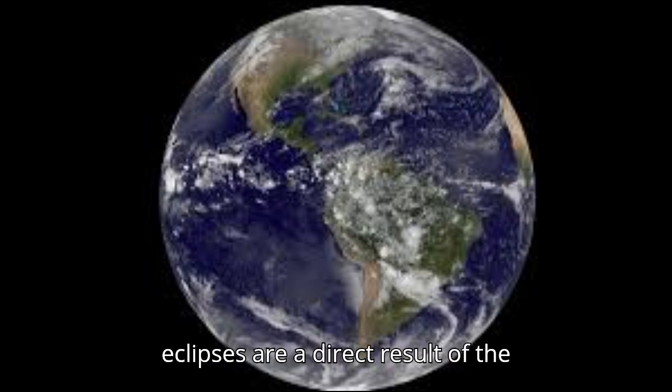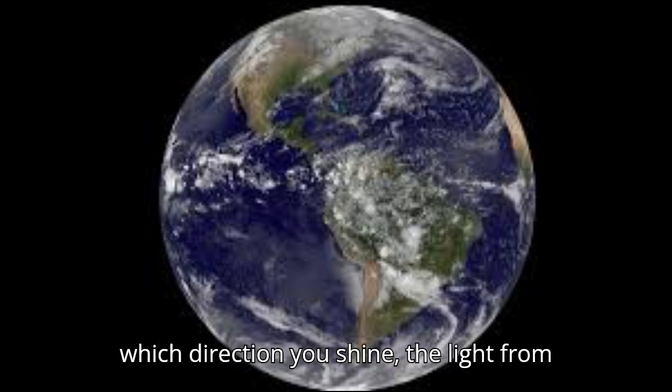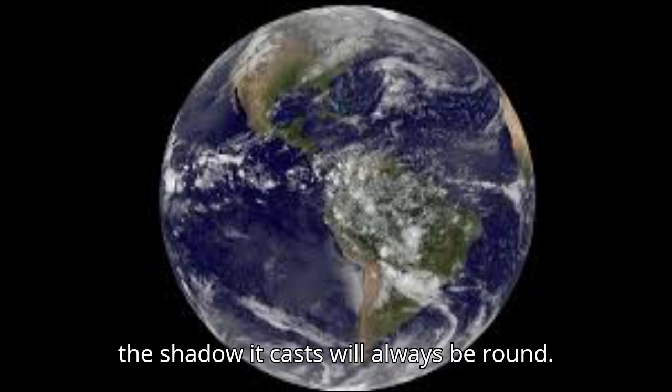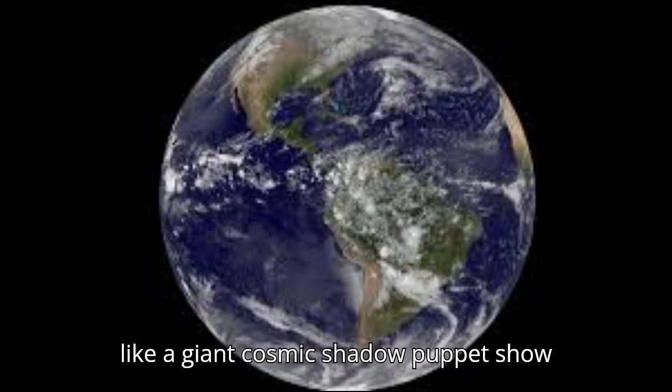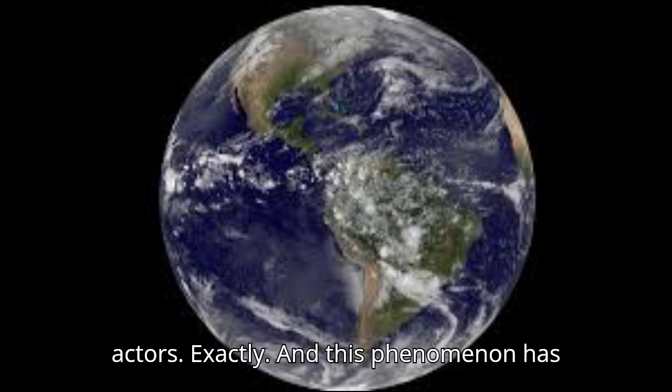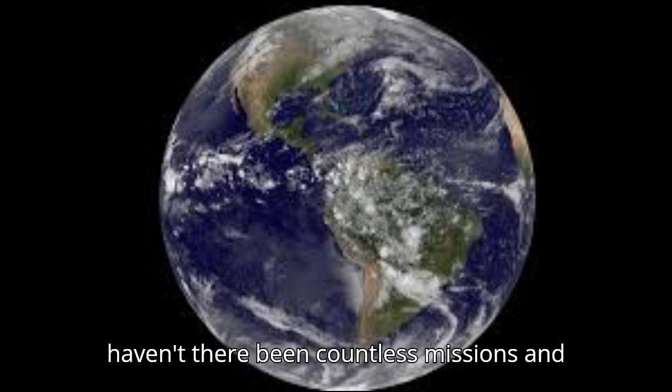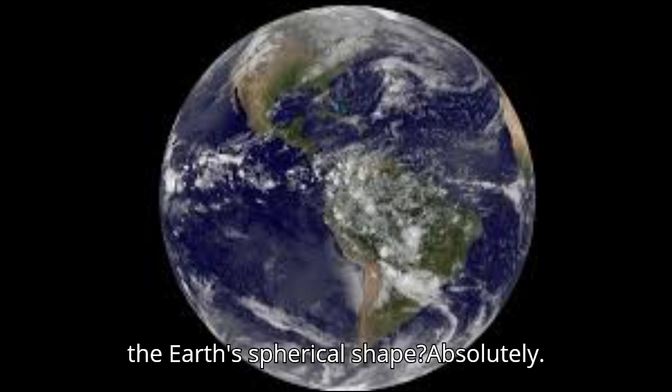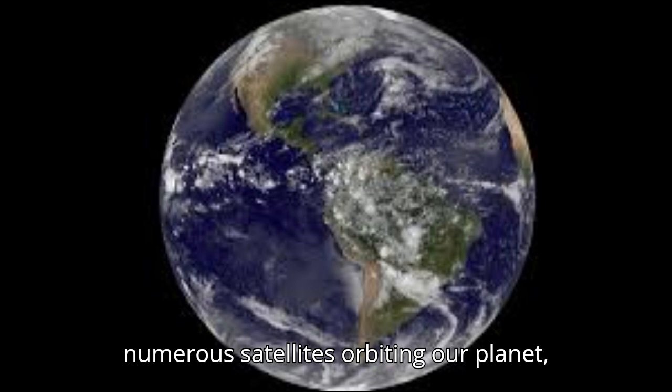It seems like shadows play a key role in proving the earth is round, both here on earth and out in space. They do. Speaking of shadows, remember how we talked about lunar eclipses in part one and how the earth's shadow on the moon is always circular no matter the angle of the eclipse? Those circular shadows we see during lunar eclipses are a direct result of the earth's spherical shape. Imagine shining a flashlight on a basketball—no matter which direction you shine the light from, the shadow it casts will always be round.